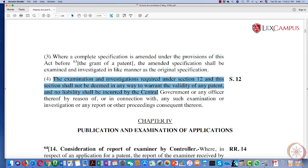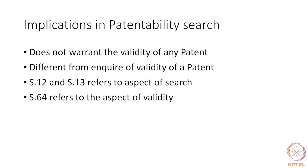A patentability search is much different from an inquiry into the validity of a patent. Sections 12 and 13 deal with aspects of search, while aspects of validity are dealt with in Section 64, which lists the grounds on which validity can be questioned. You need to bear in mind that a patentability search is not a report on the validity of a patent. The validity of a patent requires a much more in-depth analysis, and a validity report will make a statement on whether the patent is valid and give reasons why it should not be granted or why it can be invalidated in the case of a granted patent.